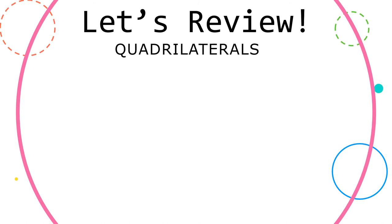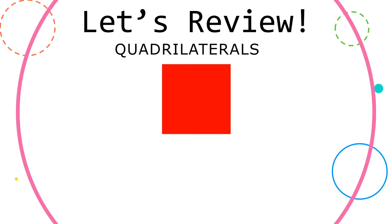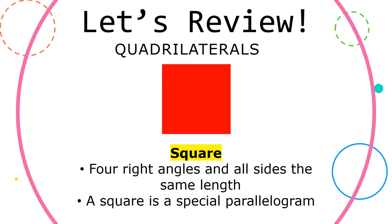Let's take a look at our next quadrilateral — it's a square. Squares have four right angles and all sides are the same length. A square is a special parallelogram. It fits into many categories: it's technically a rhombus, a rectangle, and a parallelogram, which are all quadrilaterals.